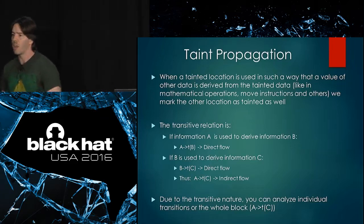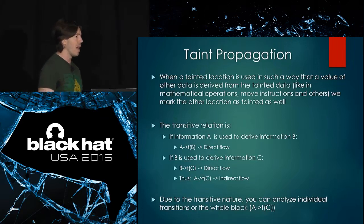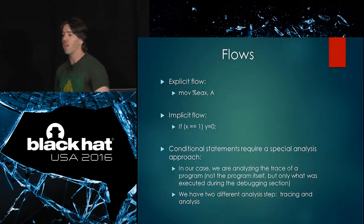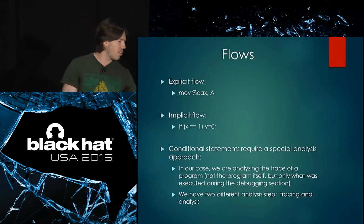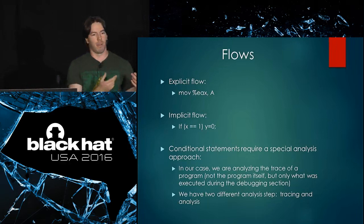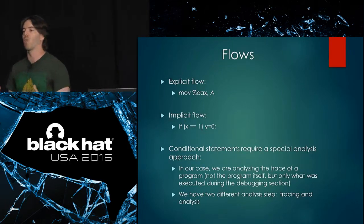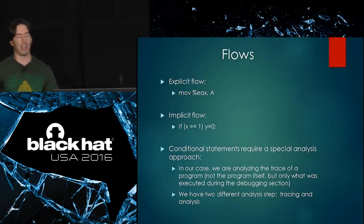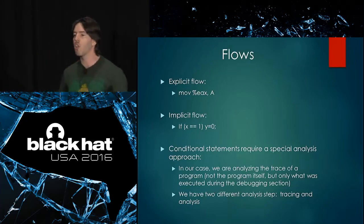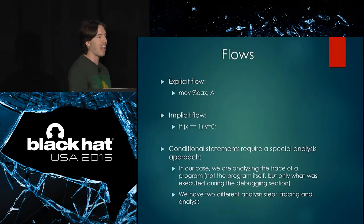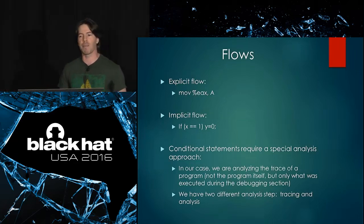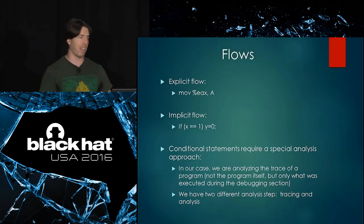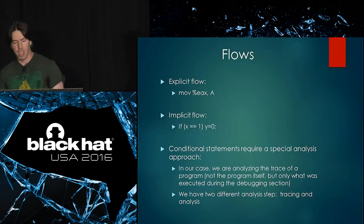Challenges include avoiding state explosion and handling implicit flows. Even if the attacker controls X, conditions that did not actually occur in the trace are invisible to us. That's why we also need the analyst — they can force those constraints, knowing the constraint comes from attacker input and forcing a new trace down the correct path of interest. We'll demonstrate one analysis with many such constraints.